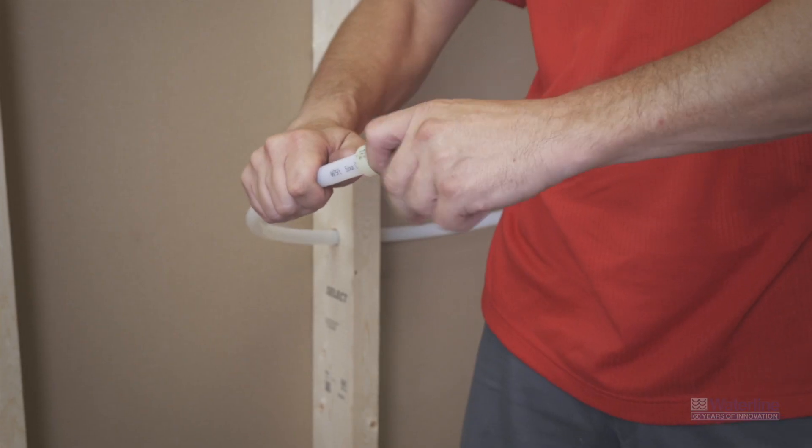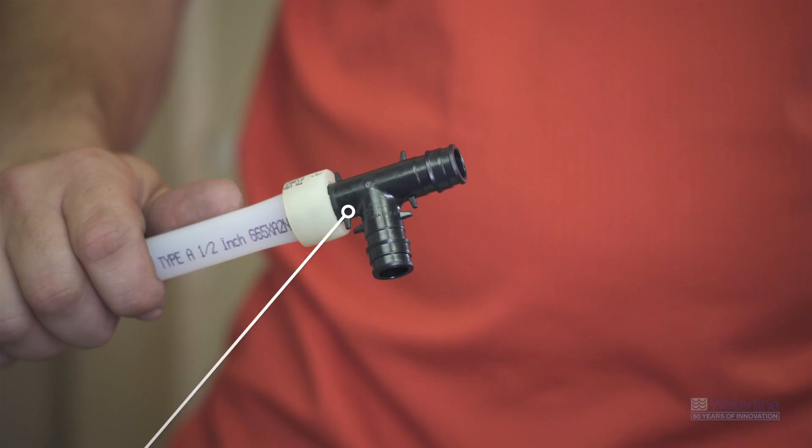Once you've expanded the pipe enough for it to reach the end of the expander head, you're ready to insert your fitting. When inserting your fitting, make sure you insert it until you reach the shoulder of the fitting. The tubing and the ring will begin to shrink back to its original diameter within seconds around the fitting, creating a secure connection. After a few seconds you're ready to make your next connection.